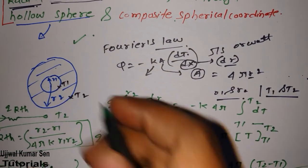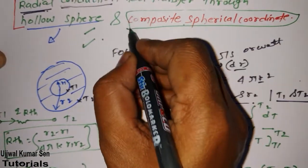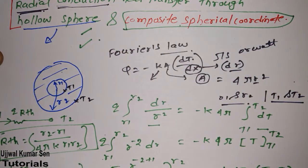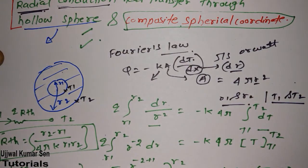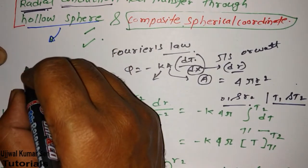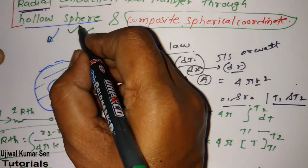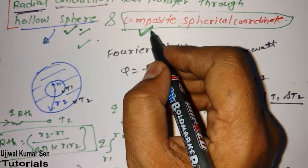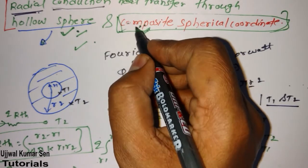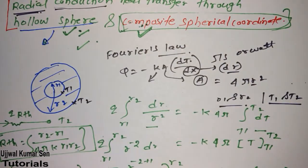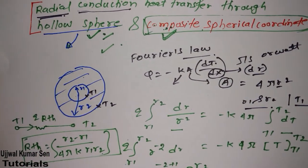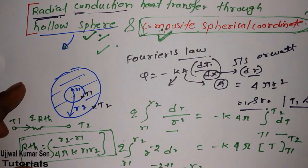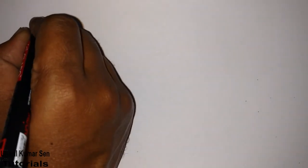This formula plays the most important role for finding out radial heat conduction in the case of a hollow sphere. Now in the next part, I'm going to share with you the composite spherical coordinate. For objective-type examinations you may get questions from here, but for subjective examinations the questions will be a little lengthier.